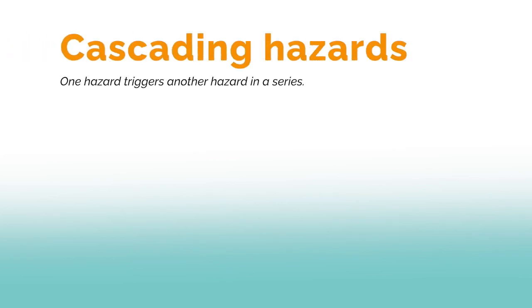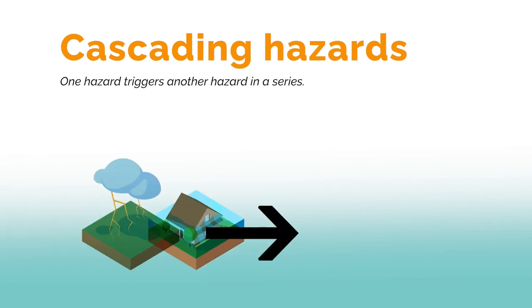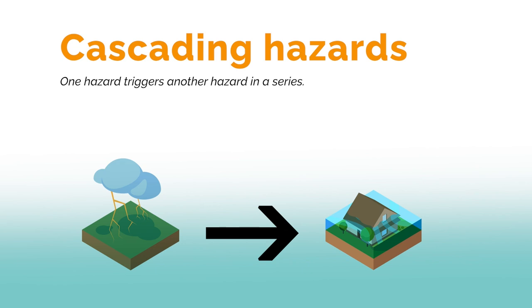The other situation we can encounter are cascading hazards. Cascading hazards happen when one hazard type triggers another hazard in a series. Similarly, each cascading hazard could give rise to disasters, depending on the level of exposure and vulnerabilities. However, cascading disasters are usually non-linear and the impact of one disaster continues to advance beyond the location of impact or for an extended time.